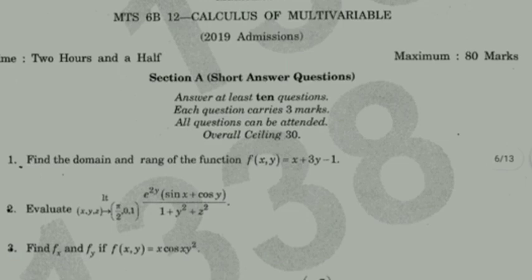Now, Section A is short answer questions. First question: find the domain and range of the function f(x,y) = x + 3y - 1.